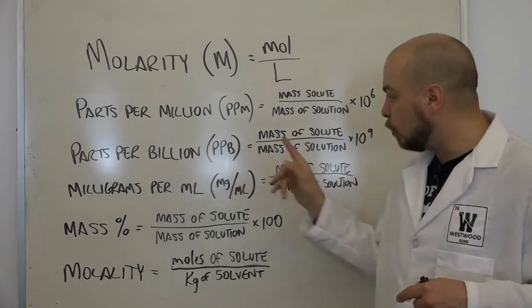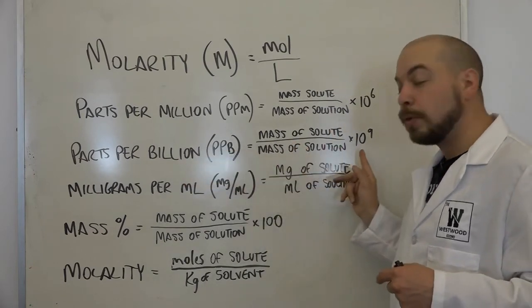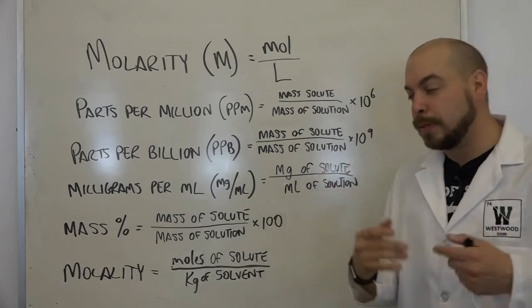Parts per billion, you do the same thing. Mass of solute over mass of solution. But you're multiplying, in this case, by 10 to the ninth because it's a billion.